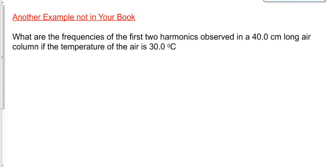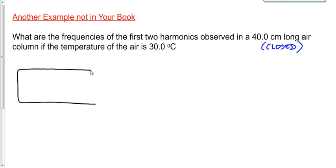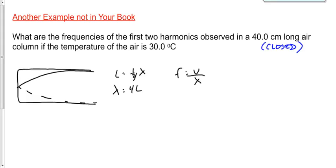Let's look at an example. What are the frequencies of the first two harmonics observed in a 40-centimeter-long closed air column if the temperature is 30 degrees Celsius? A closed air column means open at one end and closed at the other. The strategy: draw the diagram first. For the first harmonic, L equals one-quarter lambda, so lambda equals 4L, and F equals V over 4L. First, find the speed of sound: 331 plus 0.6 times 30. 0.6 times 30 is 18, giving 349 meters per second.